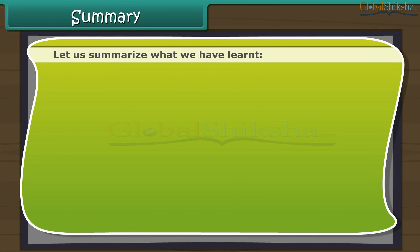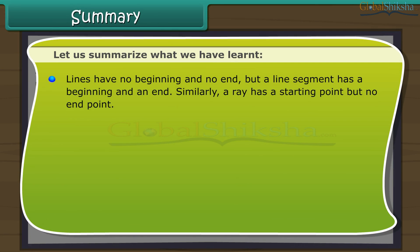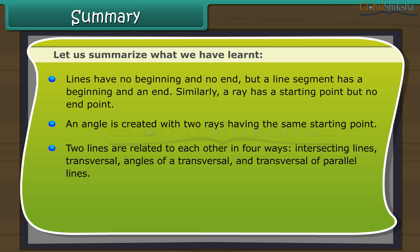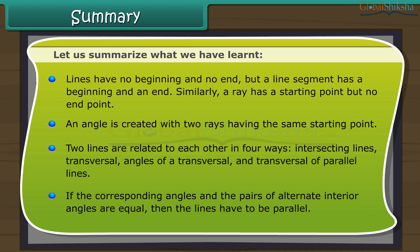Let us summarize what we have learnt. Lines have no beginning and no end, but a line segment has a beginning and an end. Similarly, a ray has a starting point but no end. An angle is created with two rays having the same starting point. Two lines are related to each other in four ways: intersecting lines, transversal, angles of a transversal, and transversal of parallel lines. If the corresponding angles and the pairs of alternate interior angles are equal, then the lines have to be parallel.